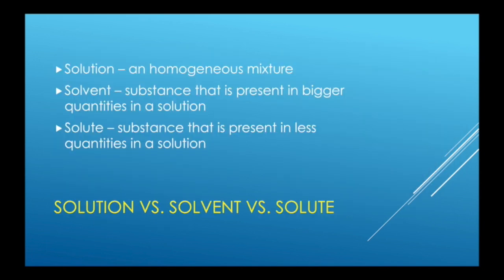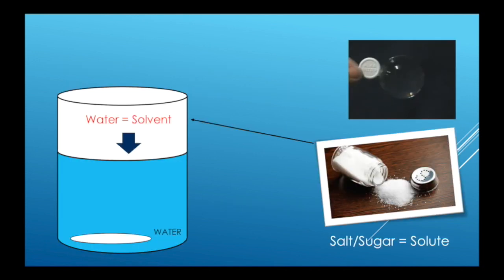Let's now give a formal definition of these concepts I want to introduce. Solution: the definition of solution is a homogeneous mixture. Solvent: substance that is present in bigger quantities in a solution. Solute: substance that is present in less quantities in a solution. Now that we define this concept, let's look at our original example again and apply the concepts learned.